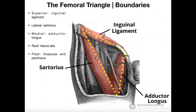Going back to the previous picture, the floor exists in the posterior aspect of the triangle and consists of two muscles: the iliopsoas and the pectineus. The pectineus muscle is here, and the iliacus — part of the iliopsoas — is visible here, with the other components covered by the vessels we're about to discuss. These are the boundaries of the femoral triangle.